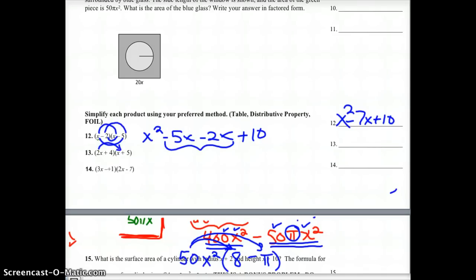Next one up first. 2x times x is 2x squared. Outside would be plus 10x. Inside, plus 4x. And my last terms, positive times a positive, would make plus 20. And we'd have 2x squared plus 14x plus 20.